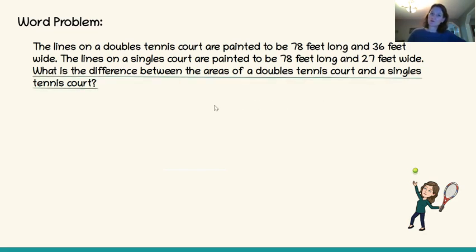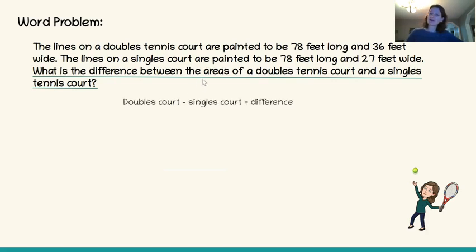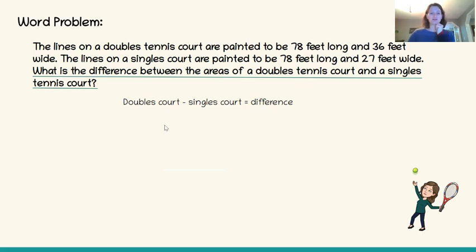We are being asked: what is the difference between the areas of a doubles tennis court and a singles tennis court? Whenever I see 'what is the difference,' that tells me there's going to be subtraction somewhere. I can tell by the numbers that a doubles tennis court is going to be bigger, so I think I'll need to work out doubles court minus singles court to get the difference. There are actually a couple of different ways we can solve this, and I'm going to show you both. Both ways work.